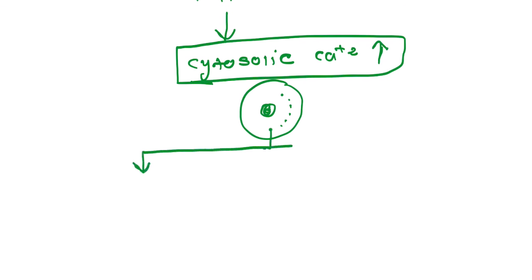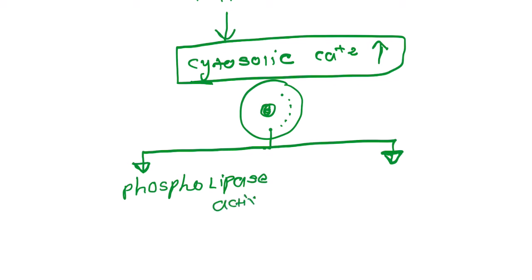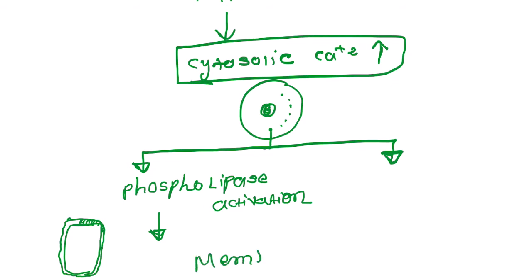This increased cytosolic calcium activates particular enzymes. One enzyme responsible for damage to phospholipids is phospholipase. Phospholipase is activated, and it damages the phospholipids present in our cell — mainly in the cellular membrane, which has the highest amount of phospholipid — so membrane damage occurs.